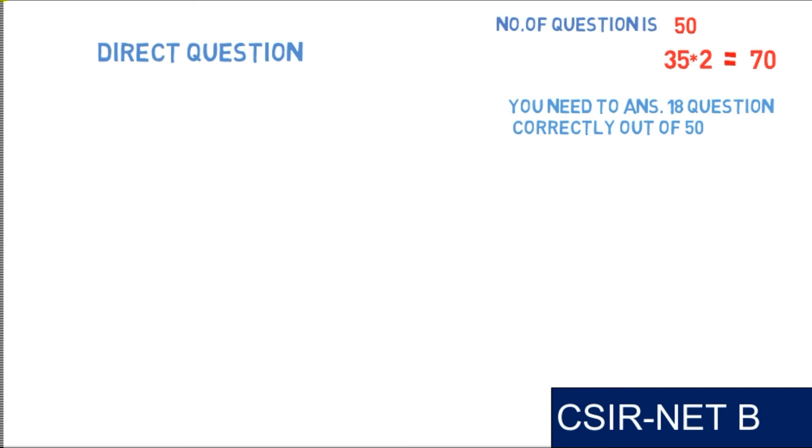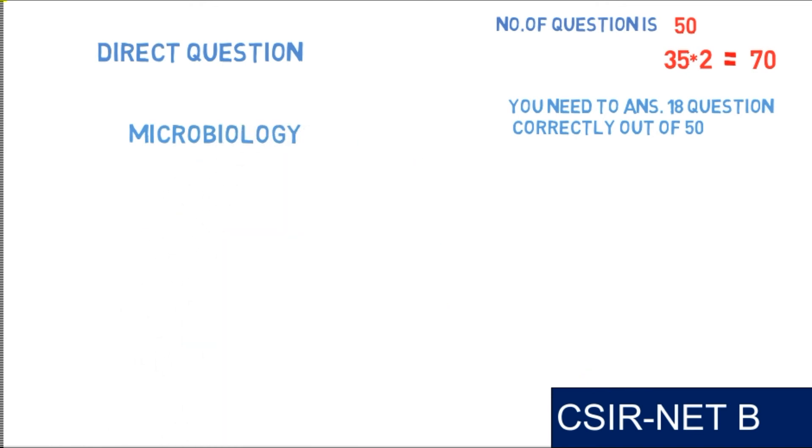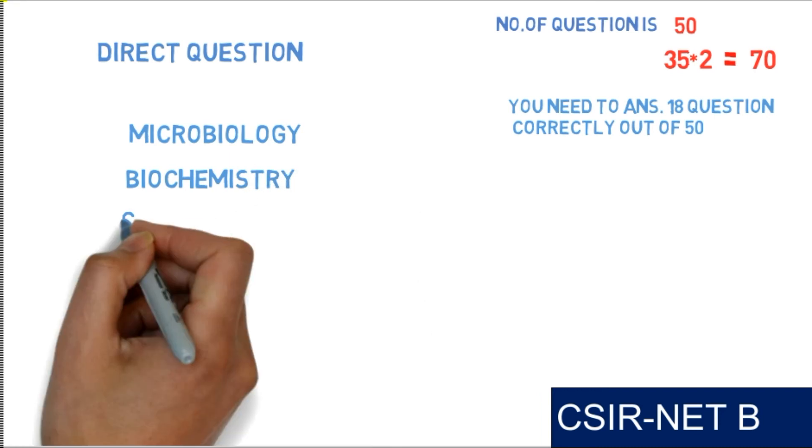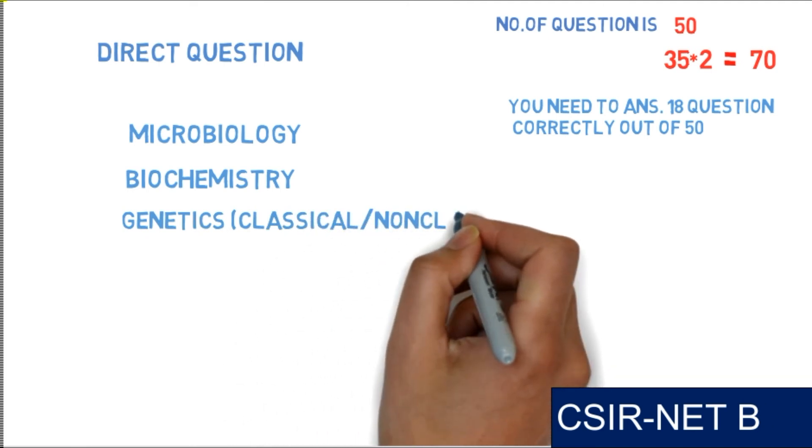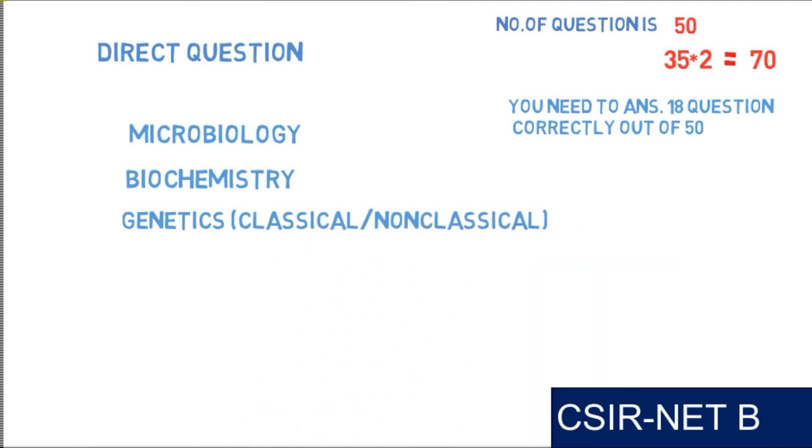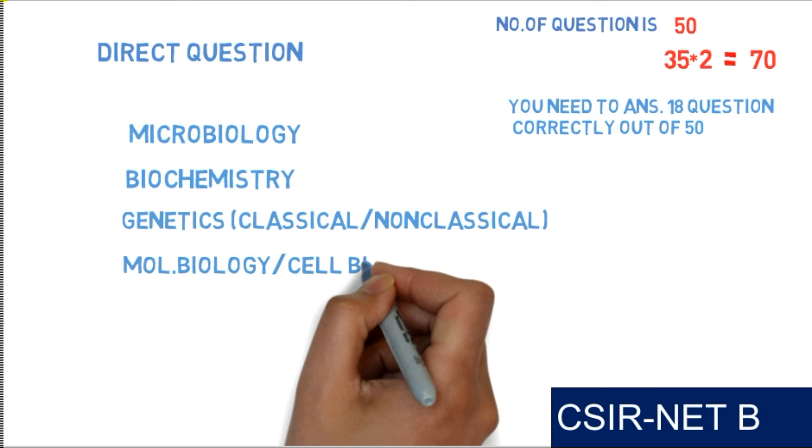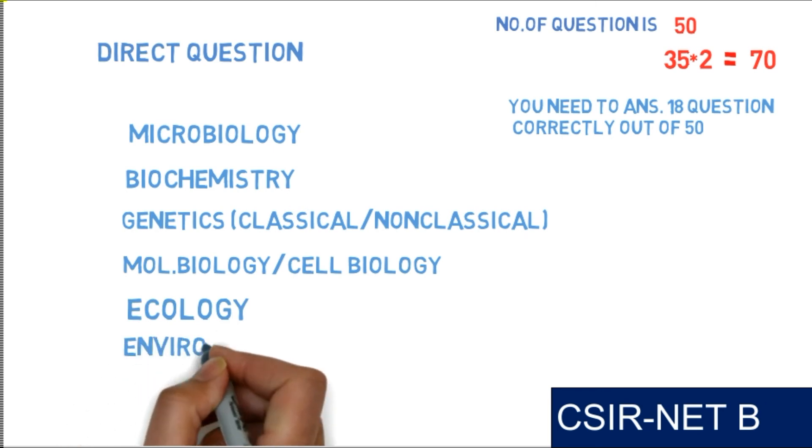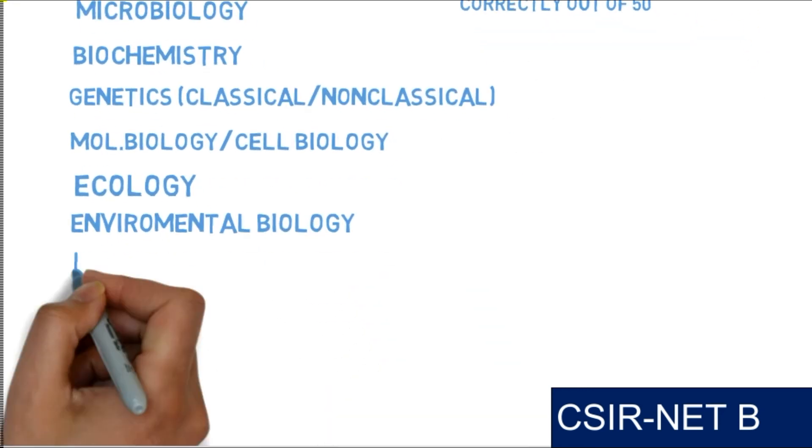I will provide you the topics that are majorly important. First topic is the microbiology section, then second is biochemistry, third is genetics that includes both Mendelian genetics and modern genetics - classical and non-classical. Fourth is molecular biology as well as cell biology, then fifth is ecology and environmental biology.